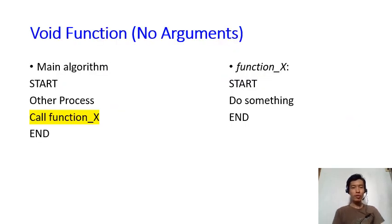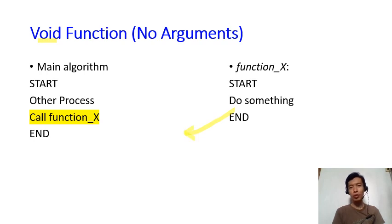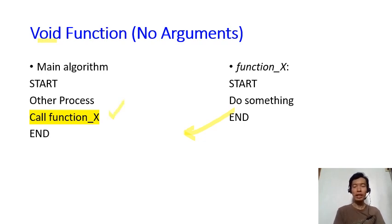Last week we saw the void function with no arguments. It is called void because the function does not return anything to the main algorithm, and it is called no arguments because we don't send any information to the function itself. We just call the function, the function does something, and then it returns to the main algorithm.